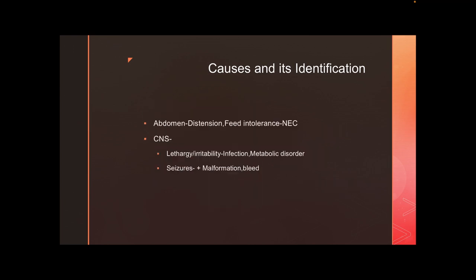Check the abdomen: if it is distended with feed intolerance and altered gastric aspirates, think NEC. CNS-wise, if the baby is lethargic or irritable, consider CNS infection or systemic sepsis. For metabolic disorders, rule out hypoglycemia first before jumping to IEM. If the baby is manifesting with seizures, remember that a seizure can present as apnea. Differentiating point: apnea from seizure tends to have a normal heart rate or tachycardia, whereas apnea from prematurity, sepsis, NEC, or IVH tends to have bradycardia.